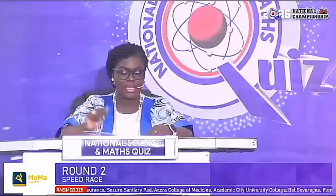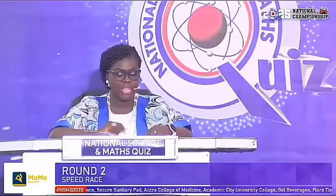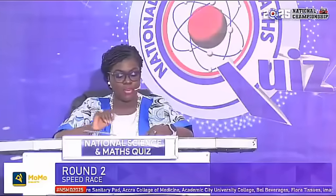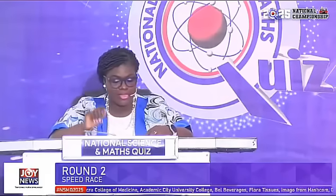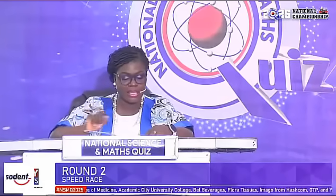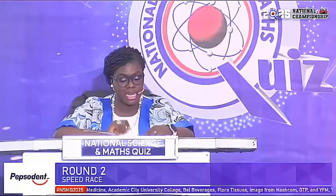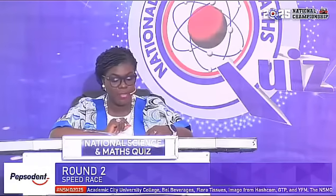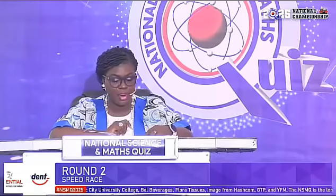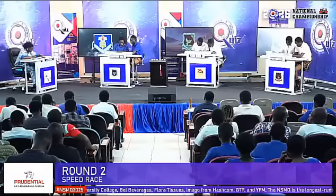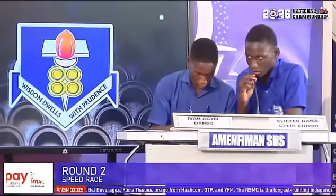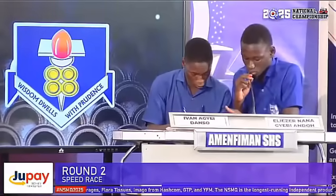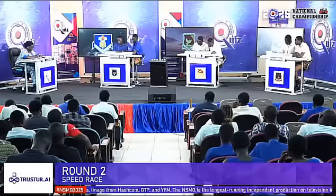Thirty seconds. Give the simplest ratio of coefficients of reactants and products in the same order as in the reaction: calcium hydroxide plus phosphoric acid. Amen Fiman answers: 3 to 2, 2 to 2, 1 to 2, 6. Yes.